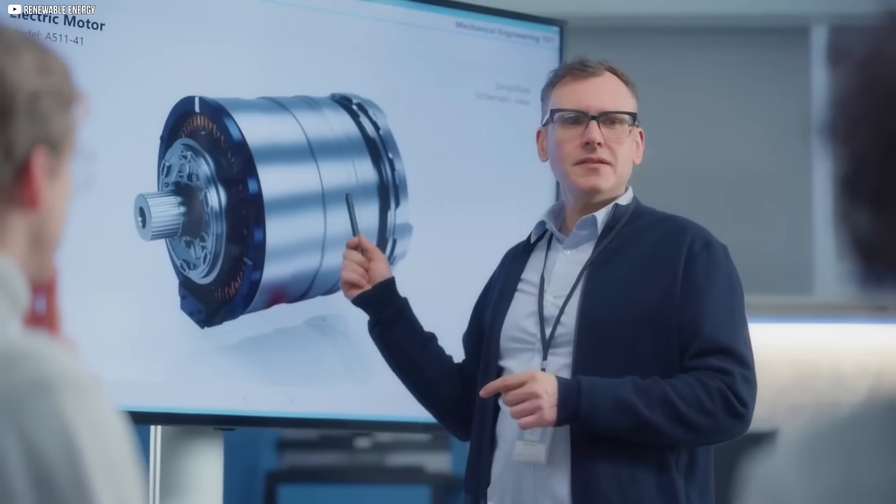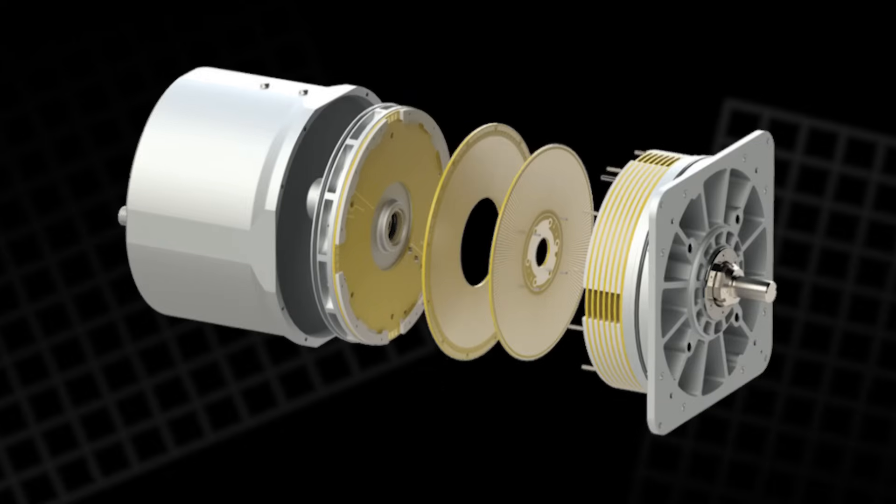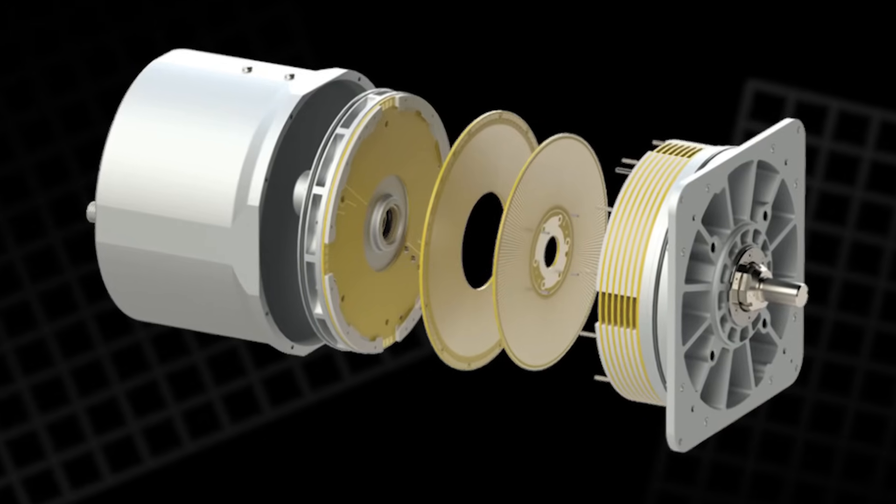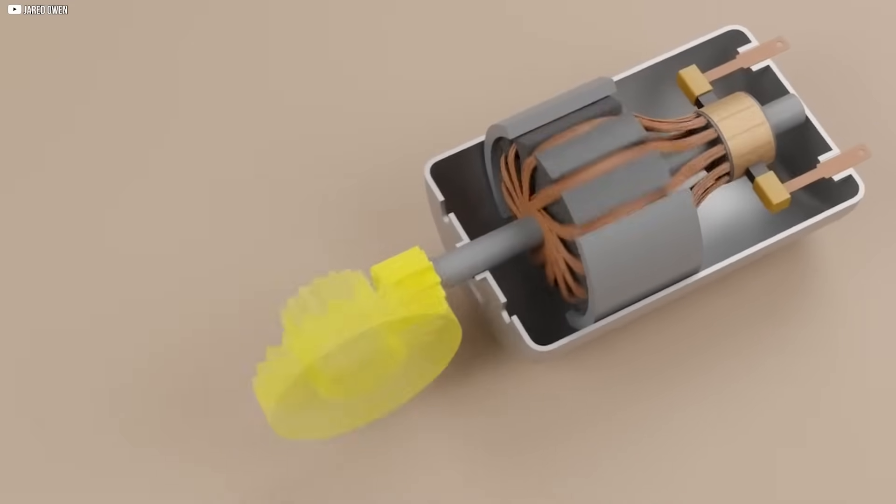Electrostatic motors avoid almost all this. Since their design does not need heavy coils on the rotor, copper use drops by as much as 90 percent.